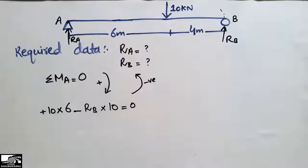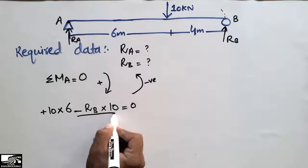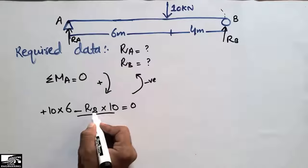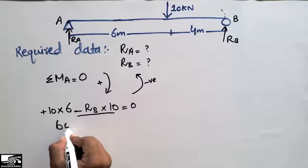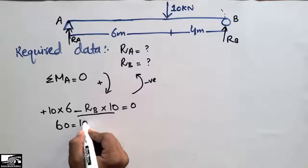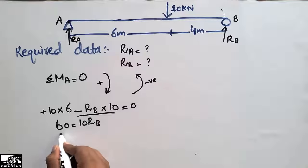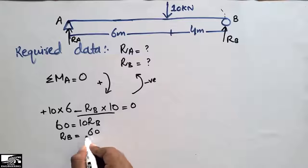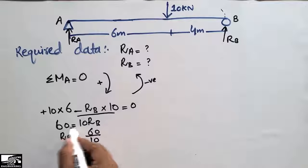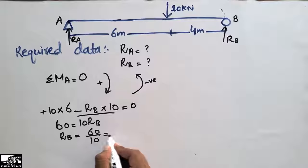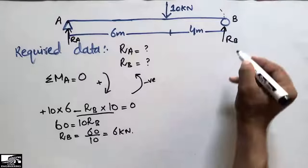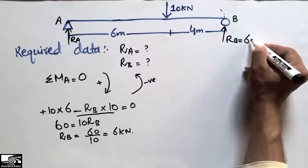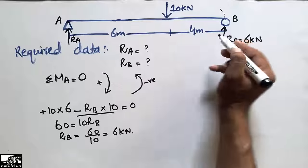Transferring terms to the right-hand side: 10 multiplied by 6 gives 60, which equals RB multiplied by 10. So RB equals 60 divided by 10, which gives RB equal to 6 kN. This means the support at B provides 6 kN of resistance to the concentrated load.